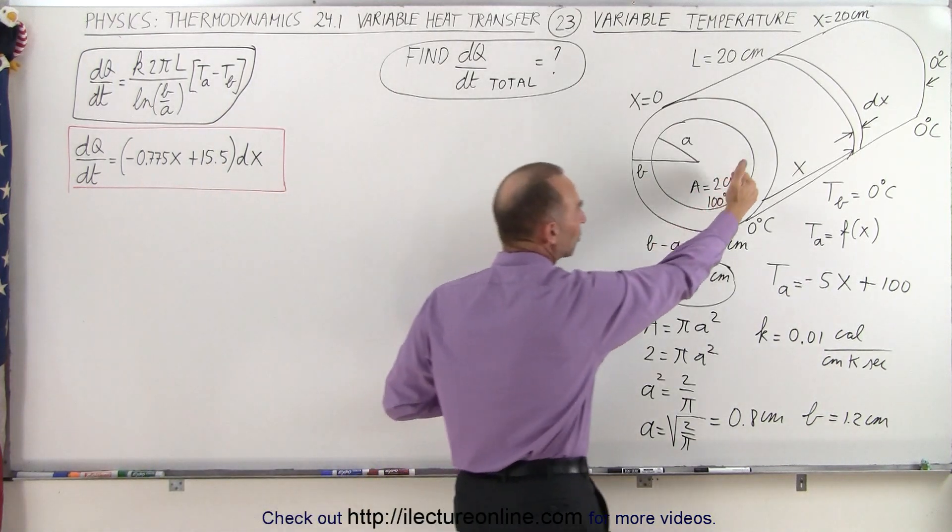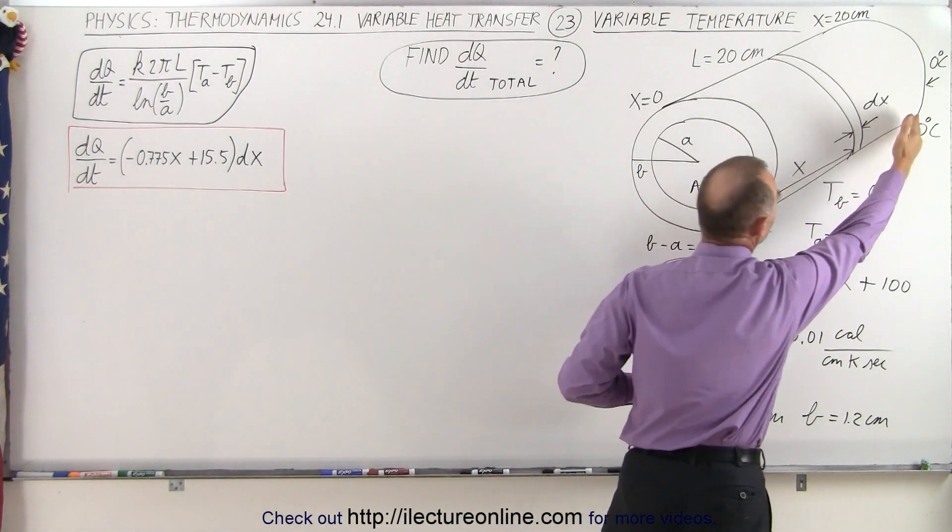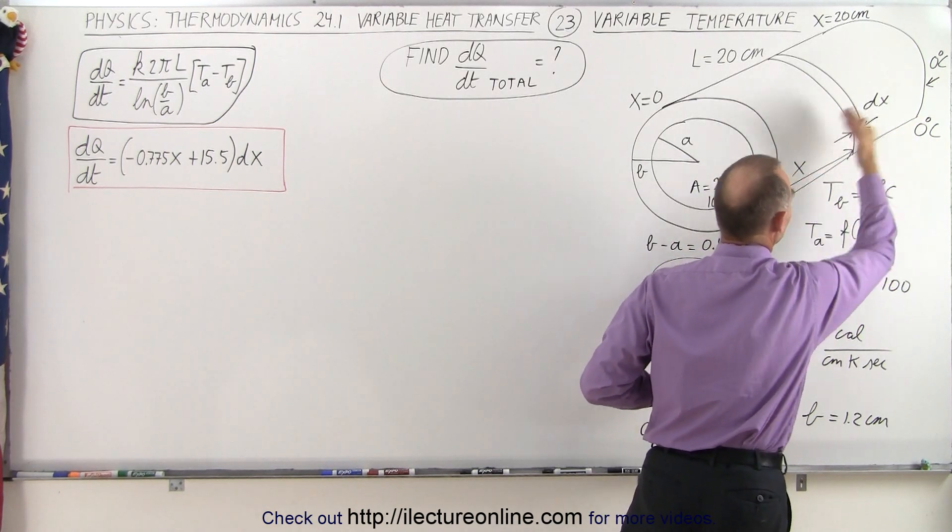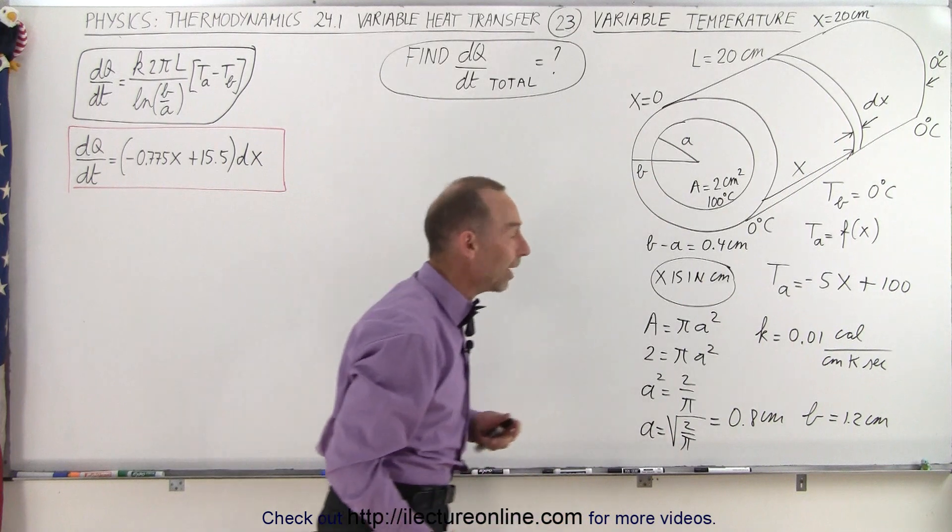So obviously there would be much more heat conduction on this end than there would be on the far end, and we'd see the heat conduction decreases from left to right or from front to back.